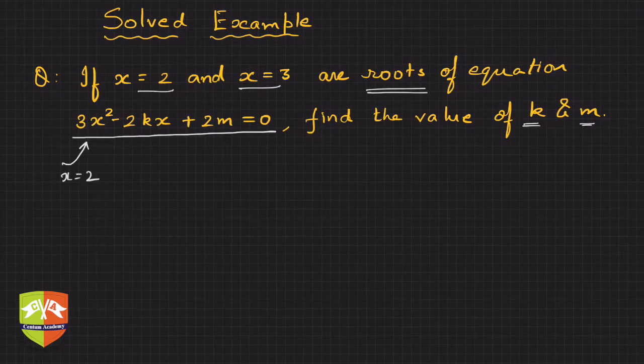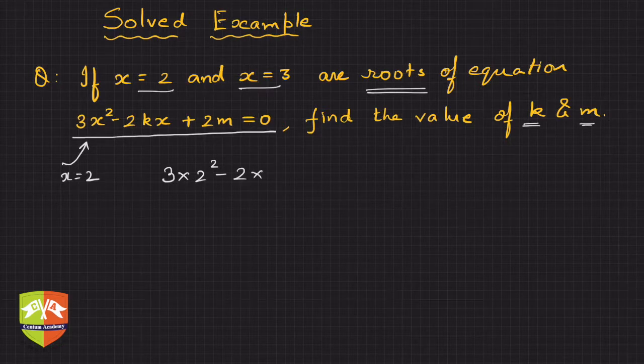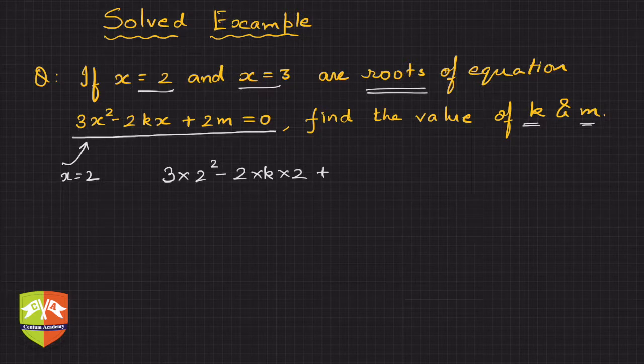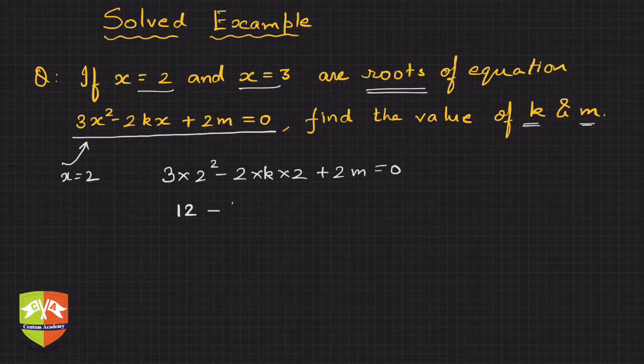So let's do that. It is 3 times 2² minus 2 times k times 2, and 2m equals 0. Hence it is 3 times 4, which is nothing but 12, minus 4k plus 2m is equal to 0.